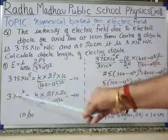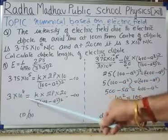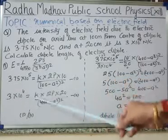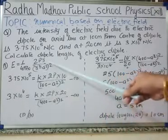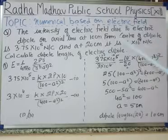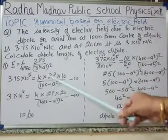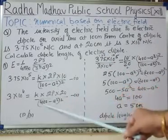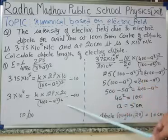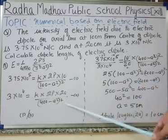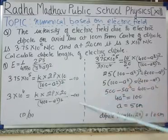Similarly, for the second case, putting R = 20 centimeters and E = 3 × 10⁴: 3 × 10⁴ = K × 2P × 20 / (400 − A²)². This is our second formula.